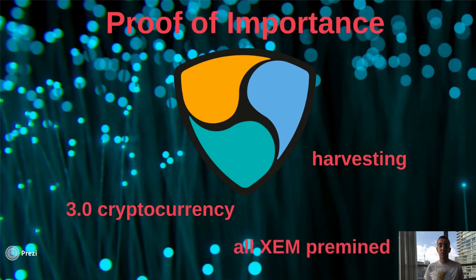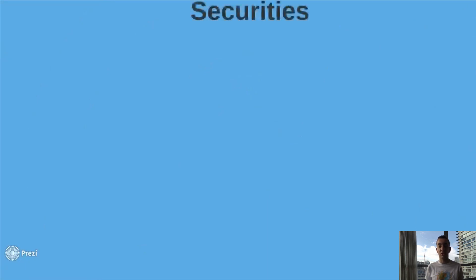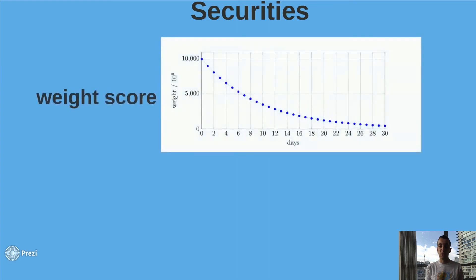Proof of importance derives from the proof of stake algorithm and has many security measures that make this consensus more fair for all users, incentivizing those who contribute to the blockchain. What is this contribution about? Mostly doing valid transactions for more than 1,000 XEM. A user gains an importance score that multiplies their vested amount of XEM, giving the final result. The weight depends on the rate of making transactions, so people who actively spend their resources get more chances to harvest based on this importance score.